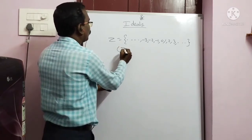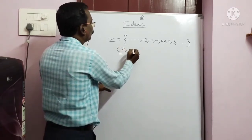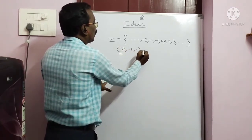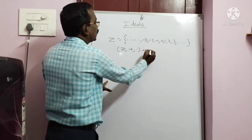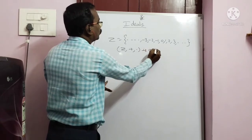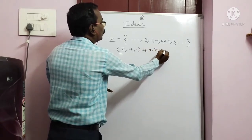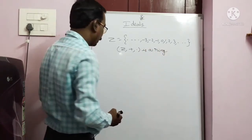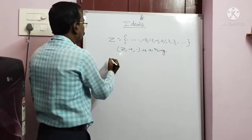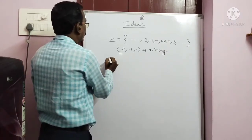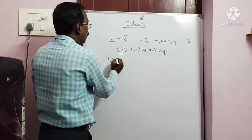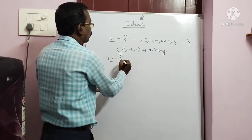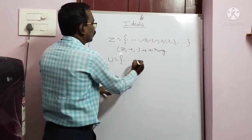Plus star is a ring. Z plus dot is a ring. Now, U and A is a set of even integers.